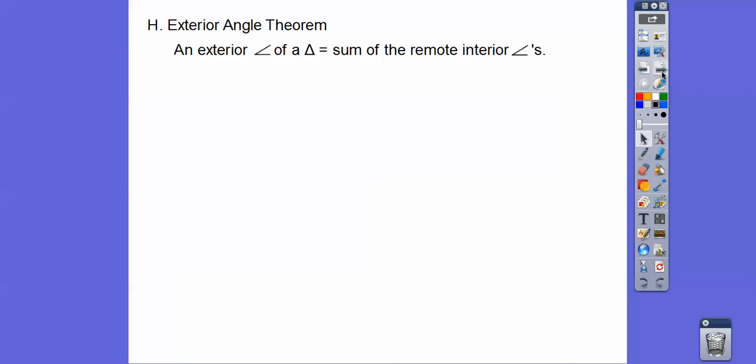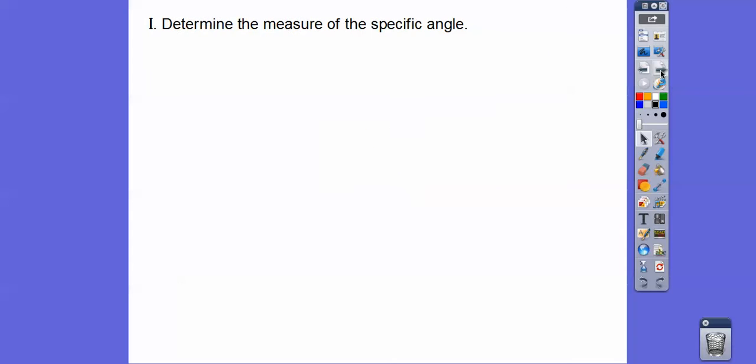So the exterior angle of a triangle, you guys, just equals the sum of the two remote interior angles. So this angle right here equals this one plus this one. And so the measure of angle 1 equals the measure of angles 3 plus 4.